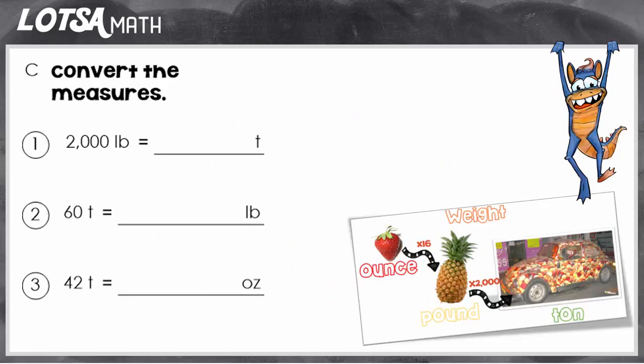On number one, we have 2,000 pounds equals how many tons? So we're going from pounds to tons. So we are going from smaller to larger or fly to horse, so we're going to divide of course. But what are we going to divide by? We have to ask ourselves how many are in one. So how many pounds are in one ton? That's 2,000. So to find the answer, we just have to divide 2,000 by 2,000, and we'll get one.